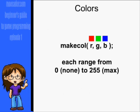When you're passing colors, the make_color function will have the r, g, and b for the parameters. These all range from 0 for none, or 255 for max.